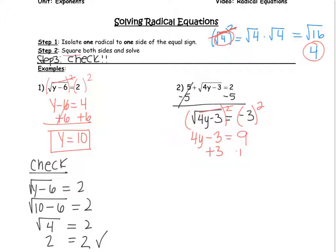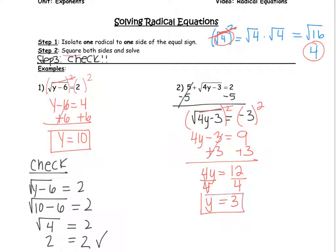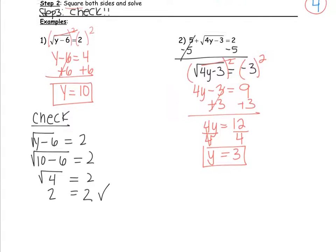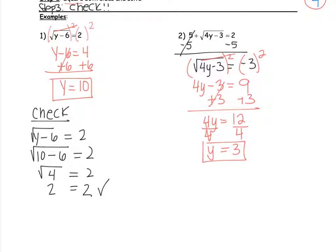And we can just solve: add 3 on both sides, divide by 4, y is equal to 3. Now again, we have to check, because if we don't check, we don't know if our answer is correct.